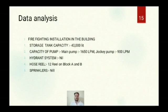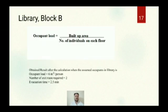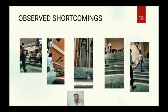The data analysis of the building includes firefighting installations: storage tank capacity is 40,000 liters, the main pump capacity is 1,650 LPM, the jockey pump is 98 LPM, and the hydrant system is 1,550 LPM. However, the hydrant system hose is not provided in Block A and B, and the sprinkler system is also not provided. In Block B, the library and student section are on the fifth floor. The library has only one exit route and lacks fire safety precautions.